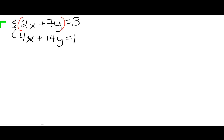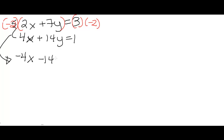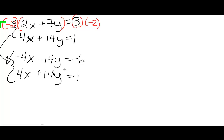Let's multiply the first equation by negative 2 — we have to apply it to both sides. Rewriting our equations: we get negative 4x minus 14y equals negative 6, and our second equation didn't change at all because our least common multiple was 4. Adding these two equations together: negative 4x plus 4x gives 0, and negative 14y plus 14y also gives 0. So the entire left-hand side is 0, and the right-hand side gives negative 6 plus 1 equals negative 5.